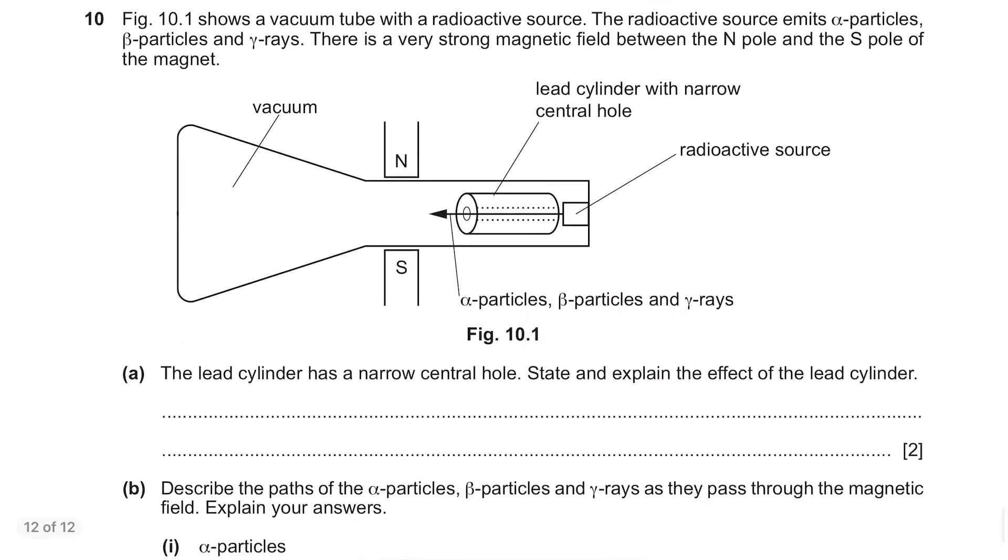Question 10. Figure 10.1 shows a vacuum tube with a radioactive source. The radioactive source emits alpha particles, beta particles and gamma rays. There is a very strong magnetic field between the N pole and the S pole of the magnet. Part A. The lead cylinder has a narrow central hole. State and explain the effect of the lead cylinder. Since it has a narrow central hole, the beam will be narrow and emit in a straight line. Also, the radiation in other directions will be absorbed by lead so you will have a clean emission.